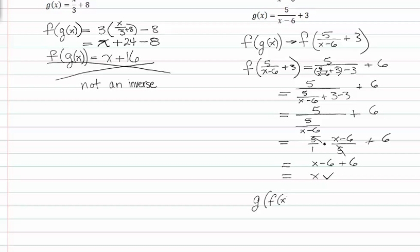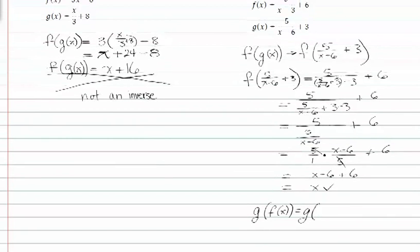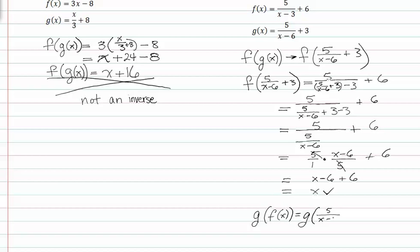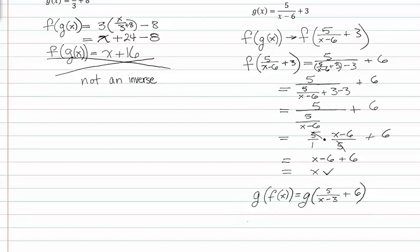We're going to try the opposite. g(f(x)) equals g of, we know f(x) to be five over x minus three plus six. So now if we rewrite that, we get g of five over x minus three plus six equals five over some value minus six plus three. If we plug this value of x in for the empty space where x was, we get five over x minus three plus six.